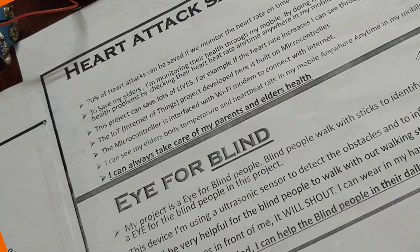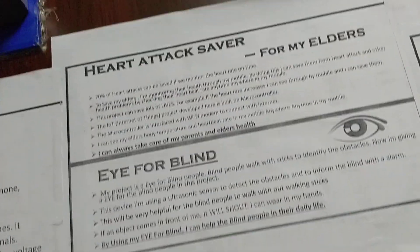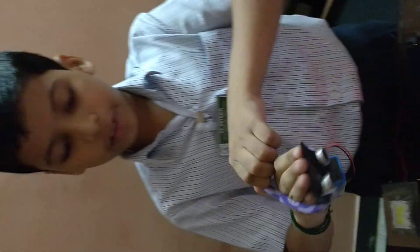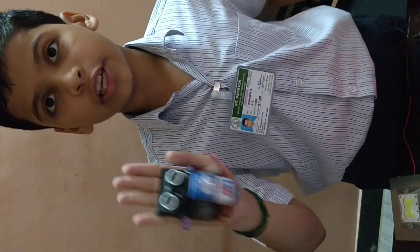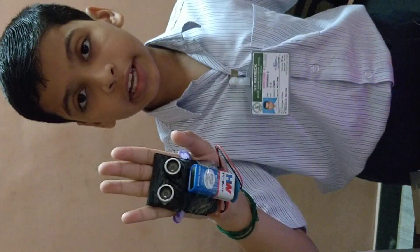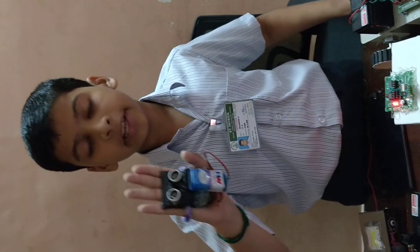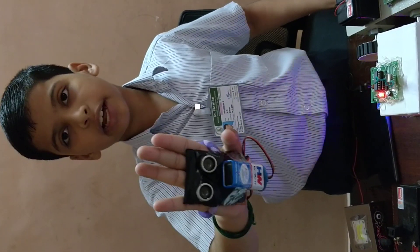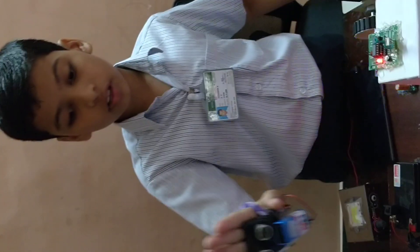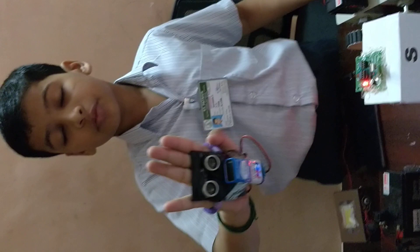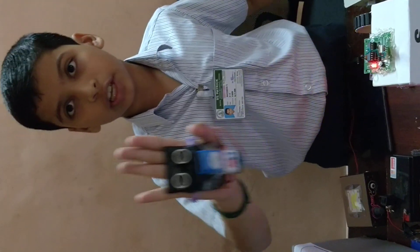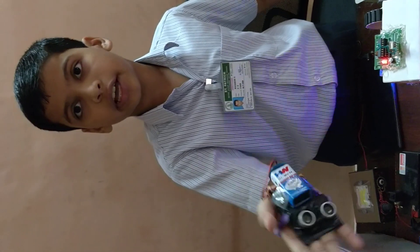This project is to protect my parents and elderly people. This is eyes for the blind. Blind people walk with their sticks to identify objects. I'll wear it on my hand. If anything comes in front of this, it will automatically give an alarm. By using this project, blind people don't need to walk with their walking sticks. They can use this in their daily life.